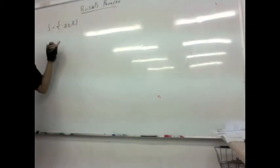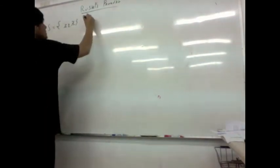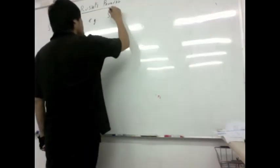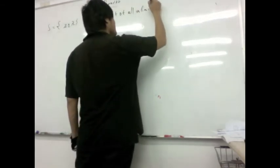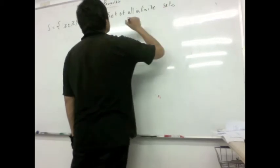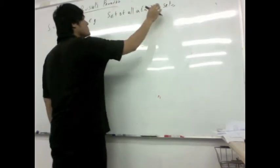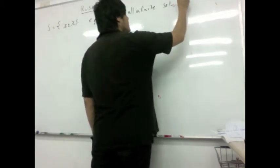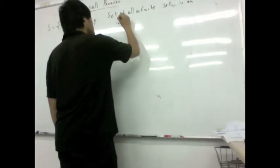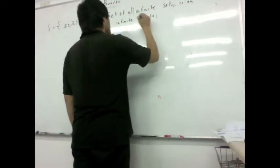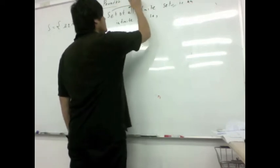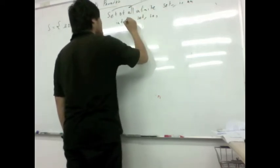This is an example of sets where set is in itself. We can have an example of set in itself. Consider set of all infinite sets. And by the way there is still always a problem. Is an infinite set? The set of all infinite sets is an infinite set. So the set of all infinite sets is called I. I is in I.